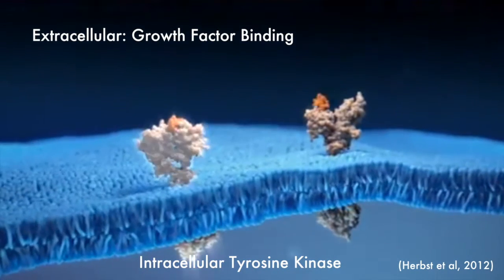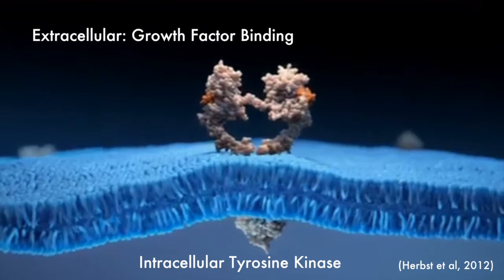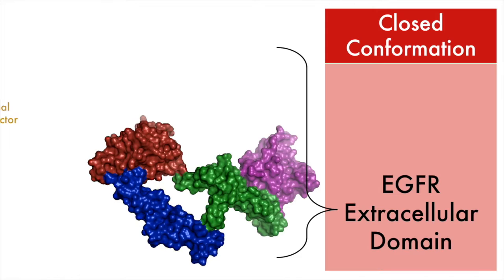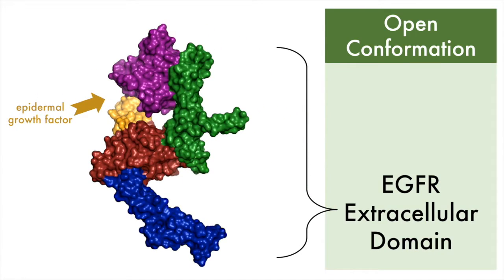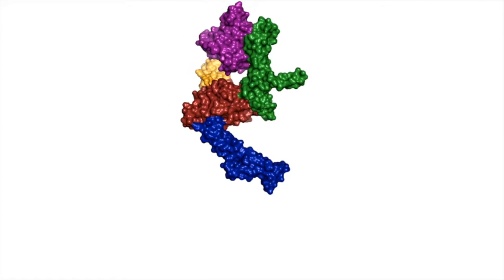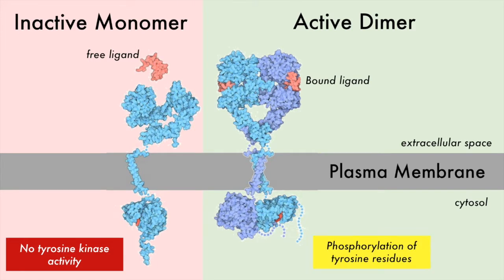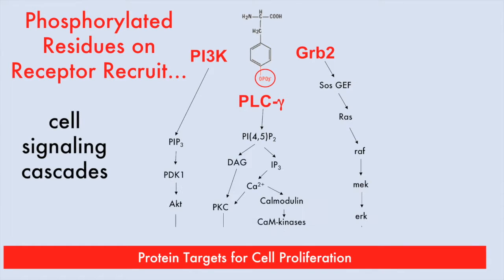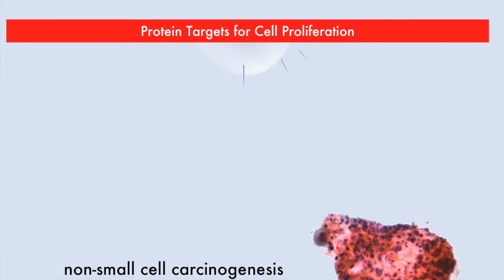EGFR is a transmembrane glycoprotein with an extracellular epidermal growth factor binding domain and an intracellular tyrosine kinase domain. Wild-type EGFR binding to its ligand results in a conformational opening of the extracellular domain, which permits receptor dimerization and autophosphorylation by the internal kinase domains on C-terminal tyrosine residues. These phosphorylated residues recruit downstream effectors in signal transduction pathways related to cell proliferation.